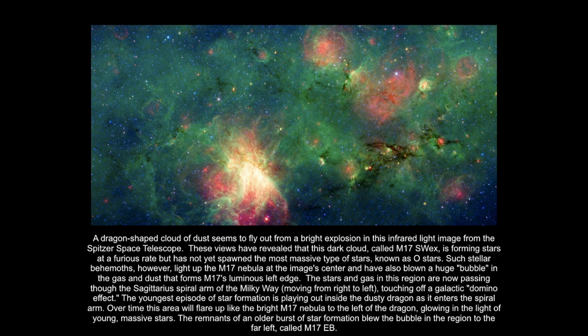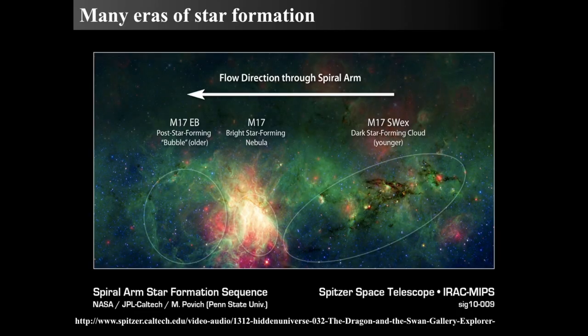We're actually looking down a cross-section of a spiral arm. This is like taking one of the spiral arms, cutting it lengthwise, and looking down it. The flow direction goes right to left in this image, where we have the dark dust clouds that are forming young stars. Then they leave the star-forming region and become an H2 region, such as M17.